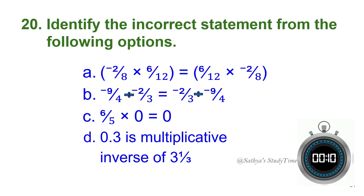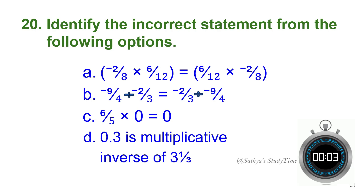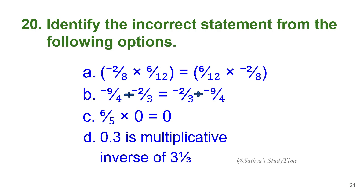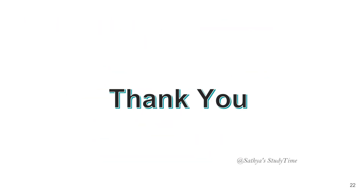Twentieth question: Identify the incorrect statement from the following options. Your time starts now. Option A: both sides are equal — correct. Option B involves 0 — correct. Option C: 0.3 is the multiplicative inverse of 3 and 1/3 — that is 3/10, whose multiplicative inverse is 10/3, which is correct. However, option B states something that is not equal on both sides, so the incorrect statement is option B. Write down your marks in the comments — see you in the next chapter, thank you.